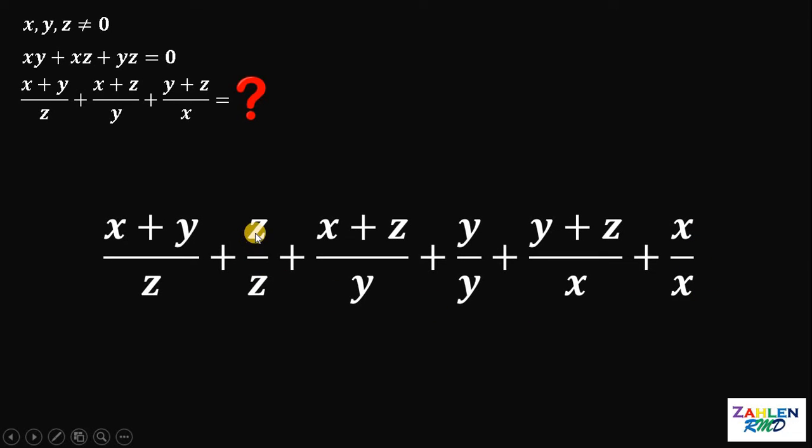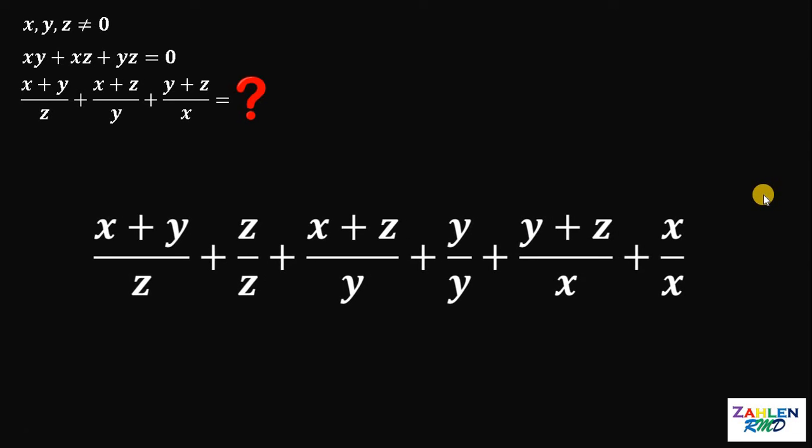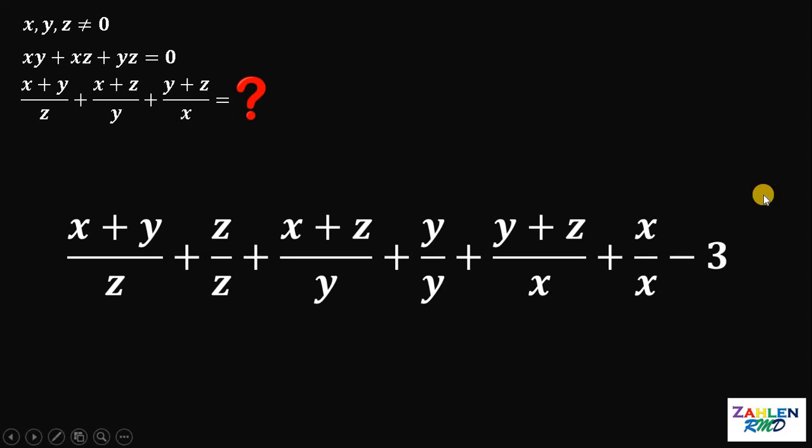Now, take note that z over z is 1, y over y is just 1, and x over x is just 1. So we're just adding 3. So since we're adding 3, we need to subtract 3 to make it balance.